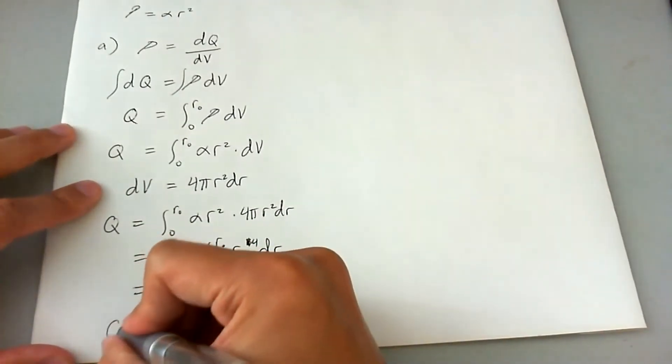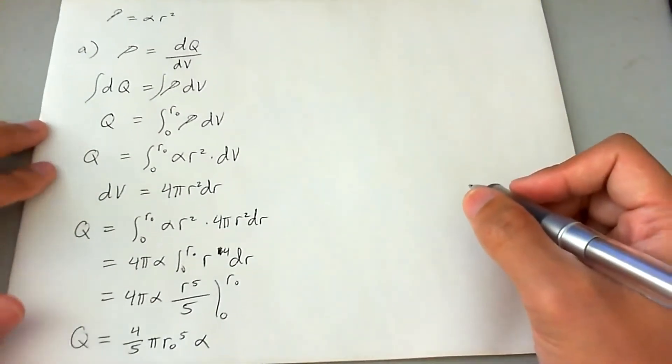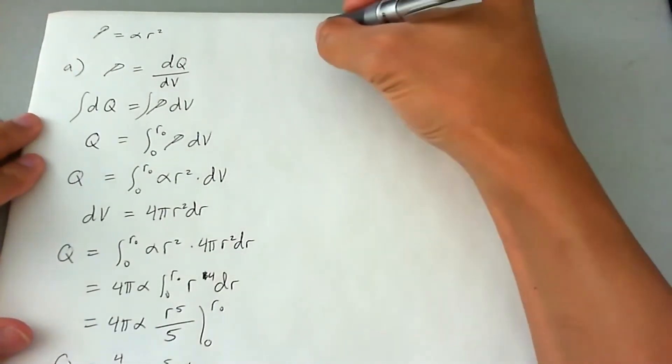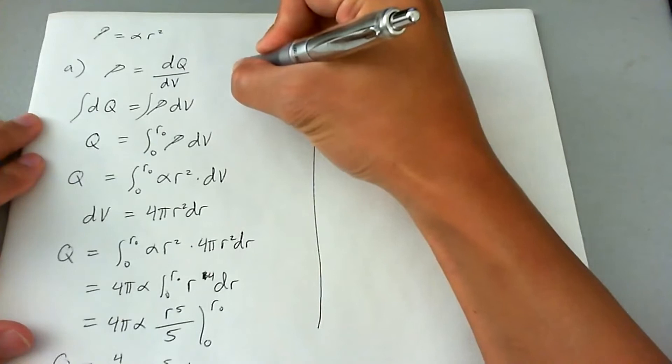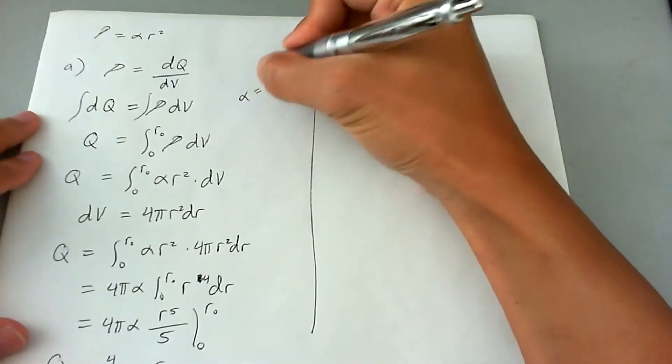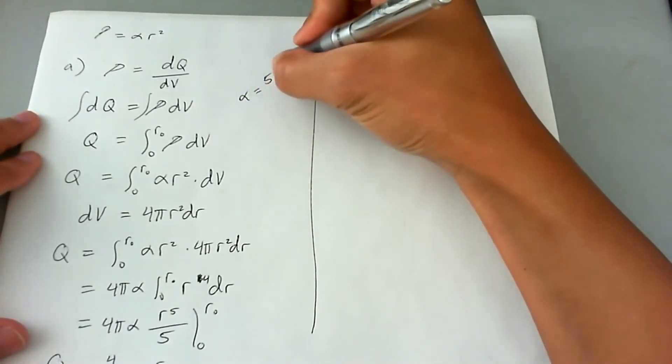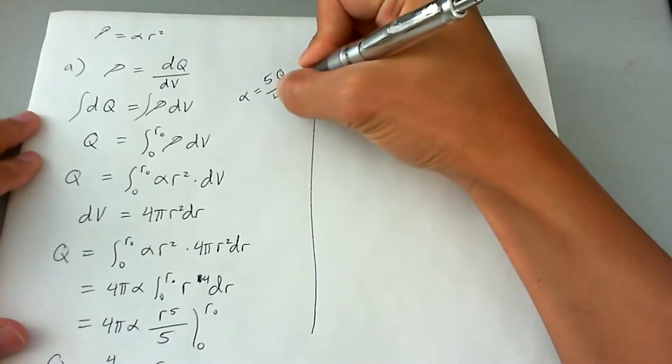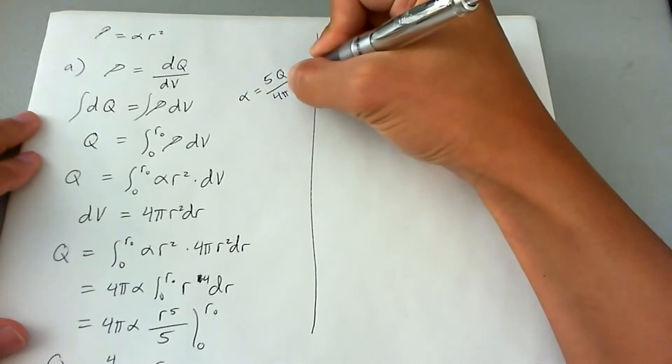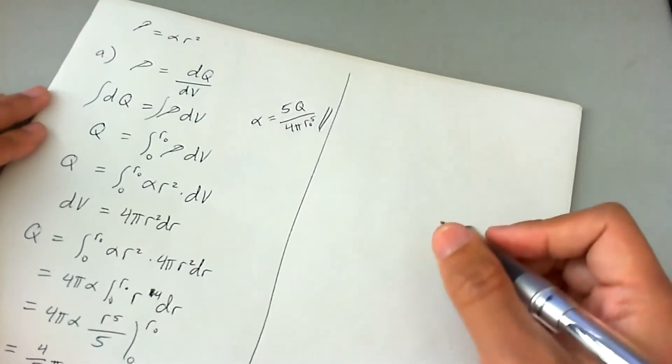Now this is then going to end up being 4 fifths pi R naught to the fifth alpha. And that's going to be Q. So now solving for alpha, which is what A required us to do, is just isolating alpha. And that's going to be alpha is equal to 5Q divided by 4 pi R naught to the fifth. And that's our answer.